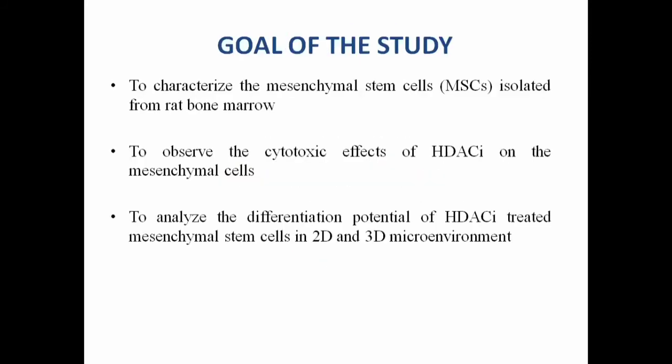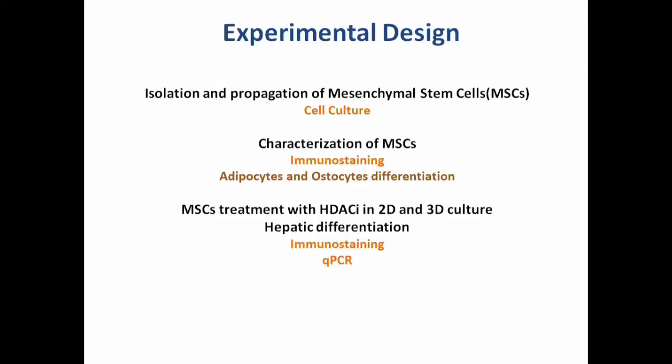The goal of this study was to characterize mesenchymal stem cells isolated from red bone marrow, to observe the cytotoxic effect of histone deacetylase inhibitor on mesenchymal stem cells, and to analyze the differentiation potential of HDACI-treated mesenchymal stem cells in 2D and 3D microenvironments. The isolation and propagation of MSCs were done in cell culture. Then MSCs were characterized based on different surface markers using immunostaining, and adipocyte and osteocyte differentiation assays were performed. Finally, MSCs were treated with an optimized dose of HDACI in 2D and 3D culture, and hepatic differentiation was analyzed using immunostaining and qPCR.